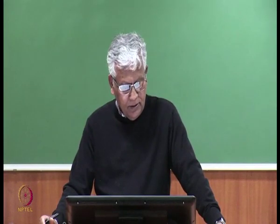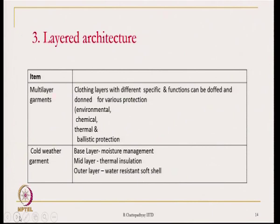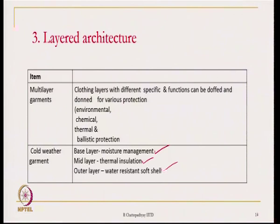Cold weather garments, if you look at them, have a layered architecture. There is a base layer for moisture management, then a middle layer for thermal insulation, and there is an outer layer which is a water-resistant soft shell. Many cold weather garments, especially jackets, have three layers with three different functions: moisture management, thermal insulation, and water-resistant or wind-resistant shell that also resists snow.